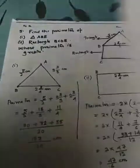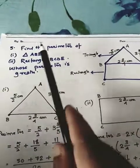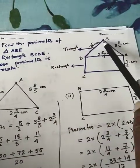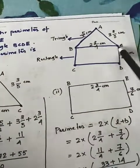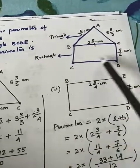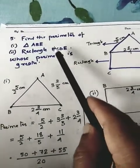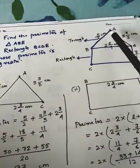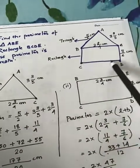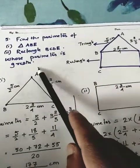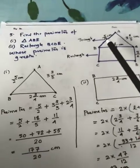Now let's move on to question number 5, which is very interesting and important. A figure is given which is a combination of a triangle and a rectangle — triangle ABC and rectangle BCDE. You have to find: the perimeter of triangle ABC, the perimeter of rectangle BCDE, and then compare whose perimeter is greater.